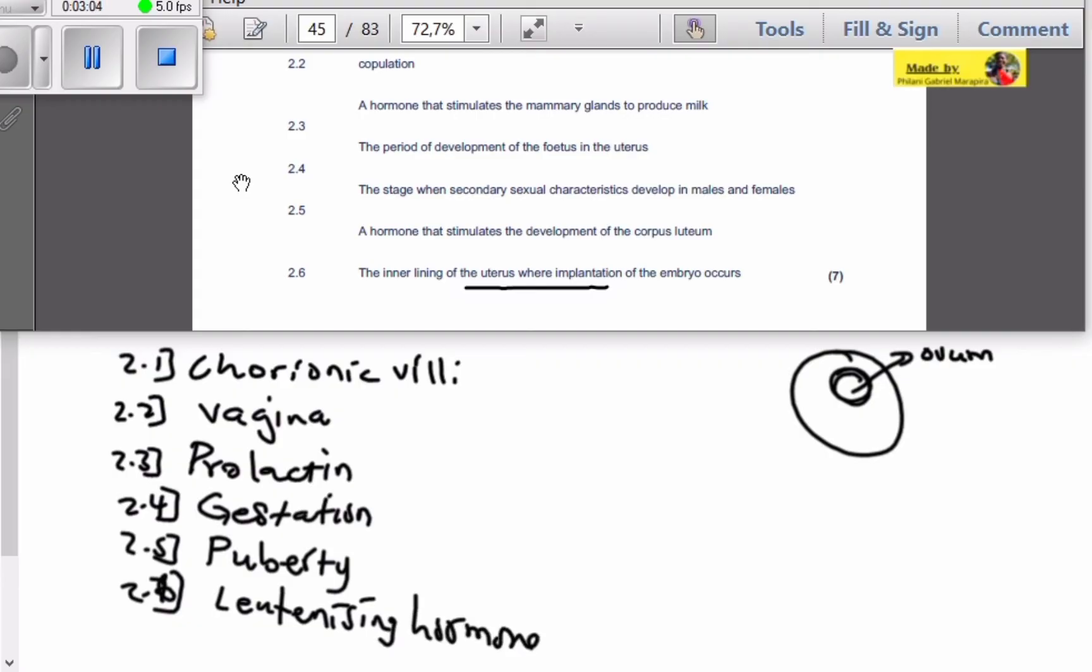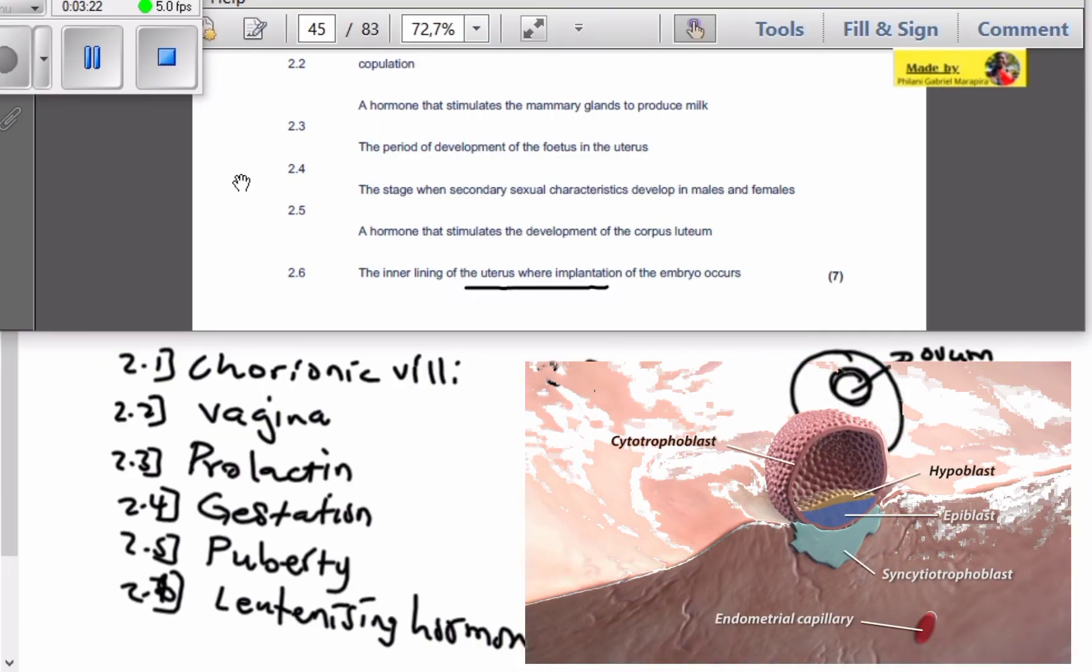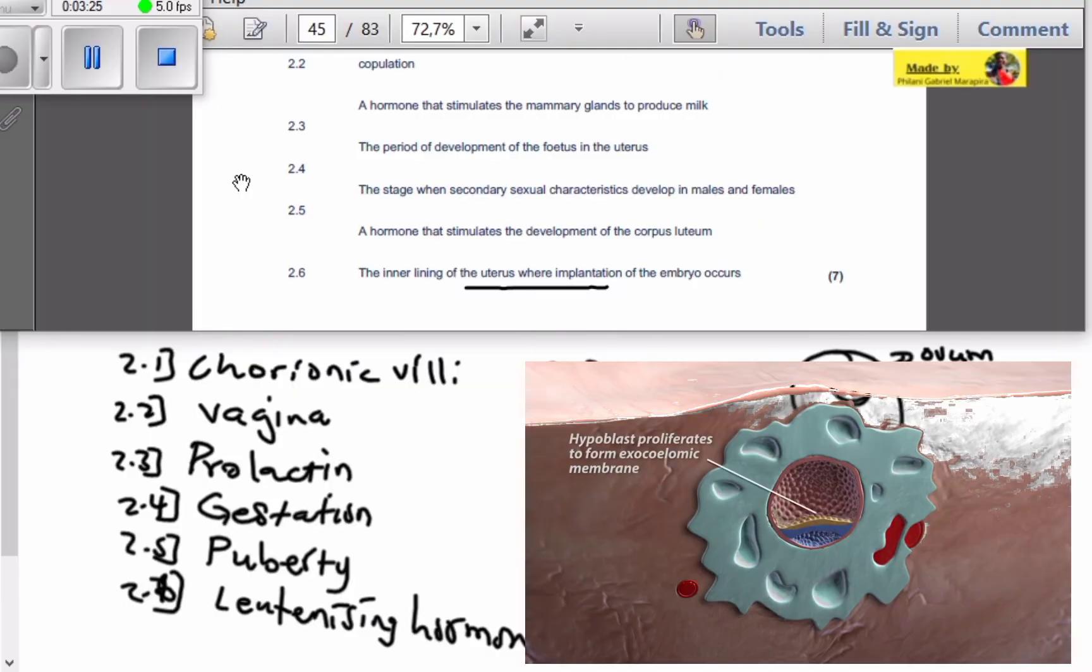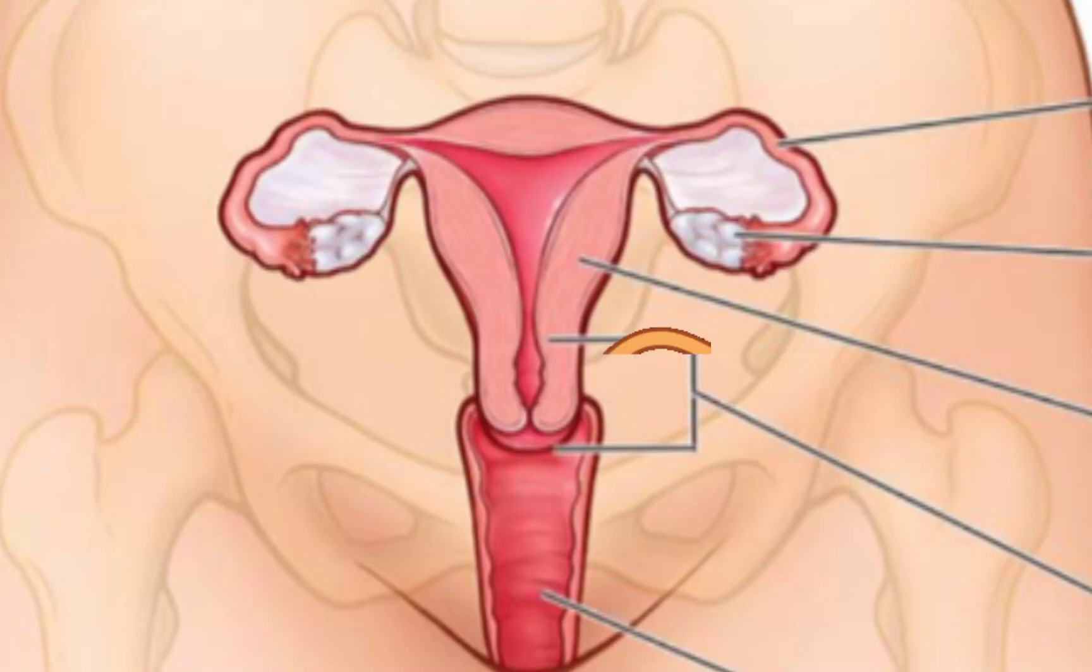And then we go to 2.7. The inner lining of the uterus where implantation of the embryo occurs. Remember, the blastocyst or embryo is implanted into the lining of the uterus which is called the endometrium.